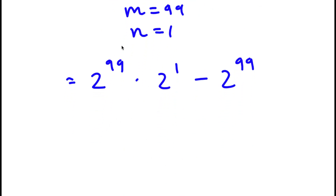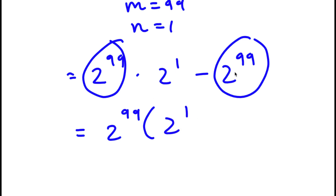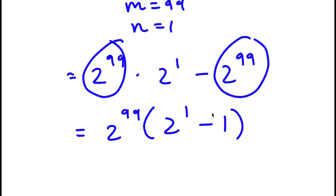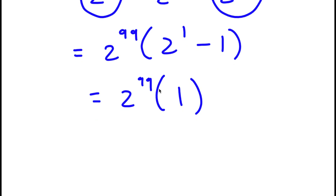Both terms have 2 to the power of 99 in them, so I'm going to factor out 2 to the power of 99. That gives 2 to the power of 99 times 2 to the power of 1 divided by 2 to the power of 99, leaving 2 to the power of 1, and negative 2 to the power of 99 divided by 2 to the power of 99 is negative 1. So this equals 2 to the power of 99 times (2 minus 1), which is 2 to the power of 99 times 1, which is simply 2 to the power of 99.